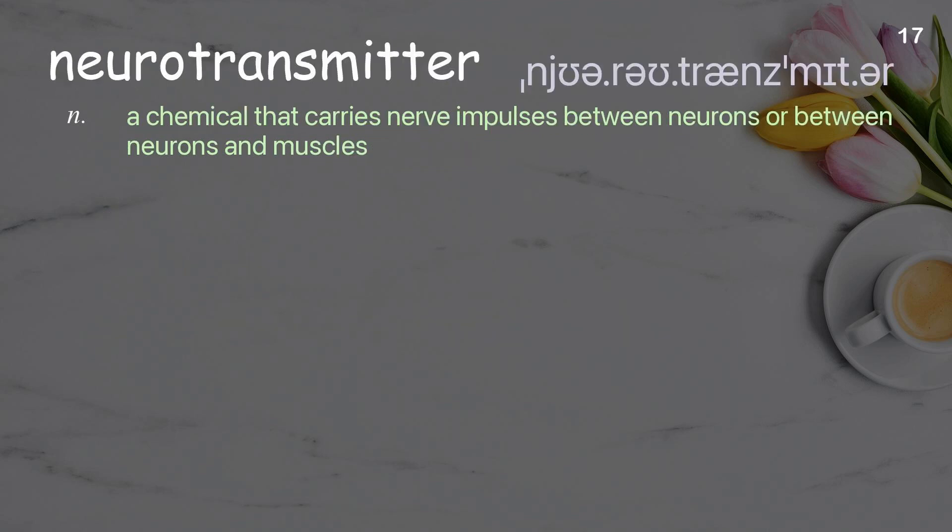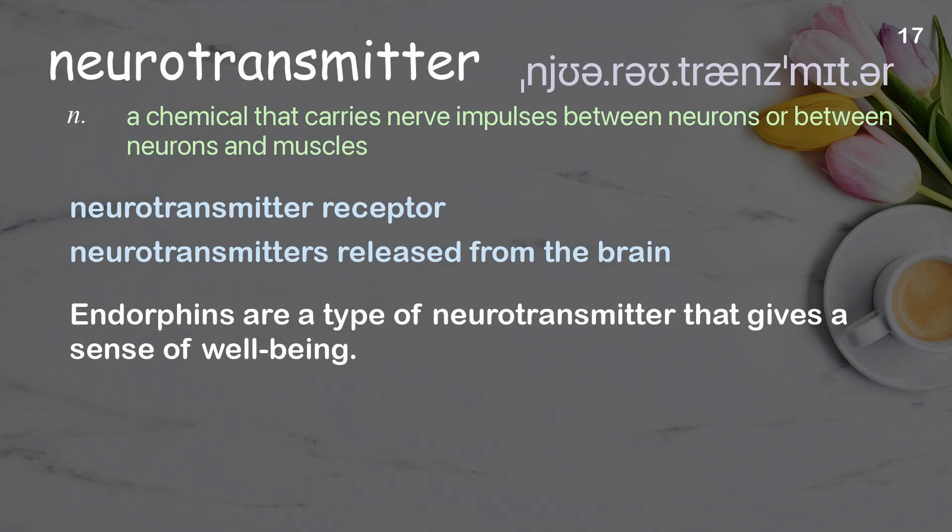Neurotransmitter: A chemical that carries nerve impulses between neurons or between neurons and muscles. Examples: Neurotransmitter receptor. Neurotransmitters released from the brain. Endorphins are a type of neurotransmitter that gives a sense of well-being.